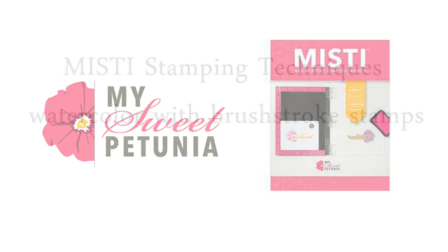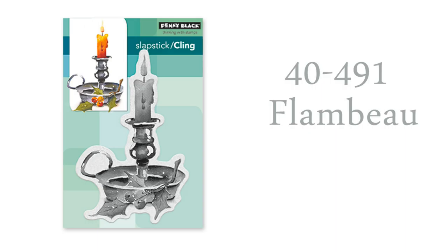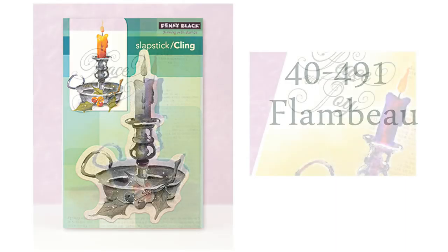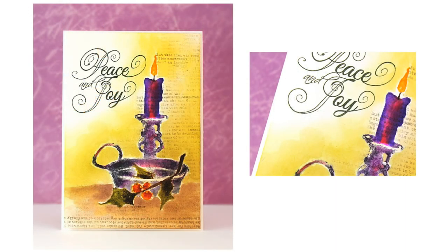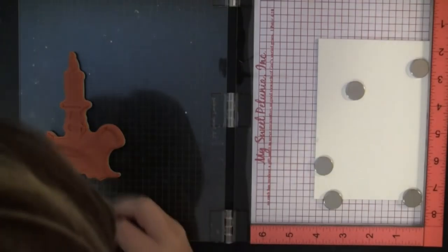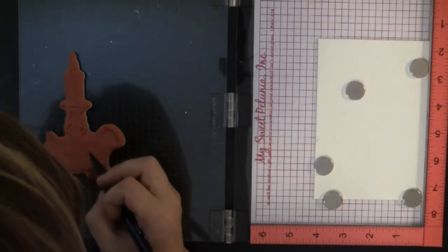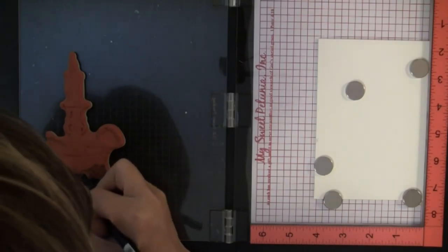The technique I'll be featuring works perfectly with these stamps and the MISTI, and it's a watercolor effect using brushstroke stamps. The stamp I'm using today is called Flambeau, and these stamps are really unique in that they have a great solid brushstroke image for the background. But if you stamp them with just ink on top, you can also get beautiful detail. So they're kind of like a two-in-one stamp, and using the MISTI you're able to access both qualities of this stamp.